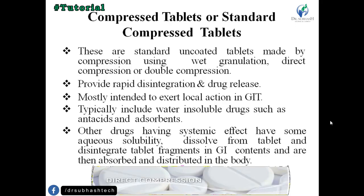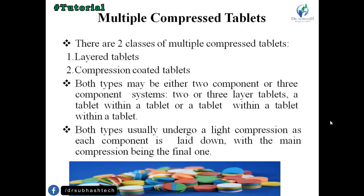Multiple compressed tablets have two classes: layered tablets and compression coated tablets. Both types may be either a two-component or three-component system. In two-layer tablets, a tablet within a tablet is prepared, and in three-layer tablets, a tablet within a tablet within a tablet is prepared. Both types usually undergo a light compression as each component is laid down, with the main compression being the final one.